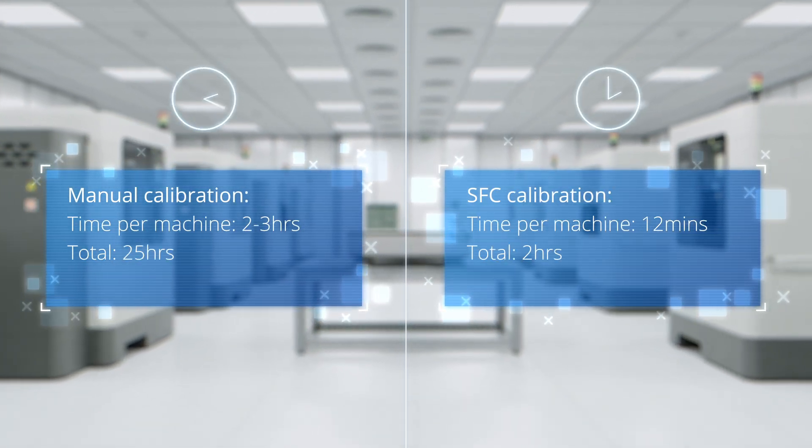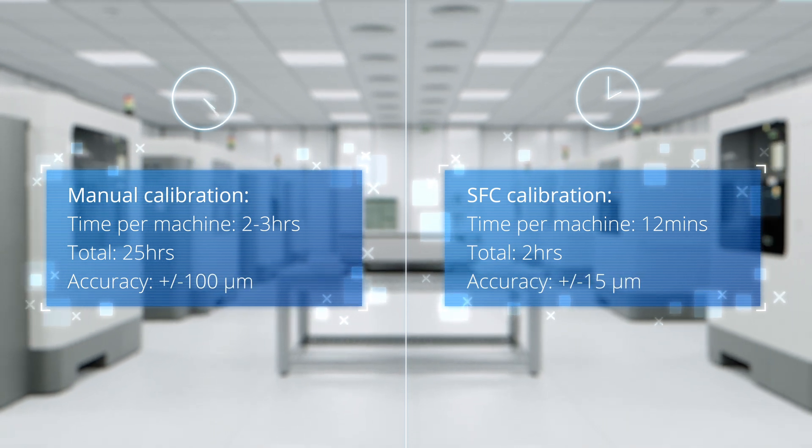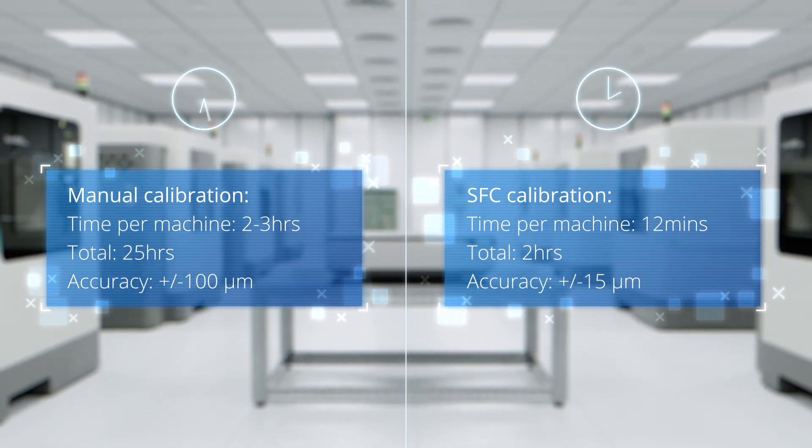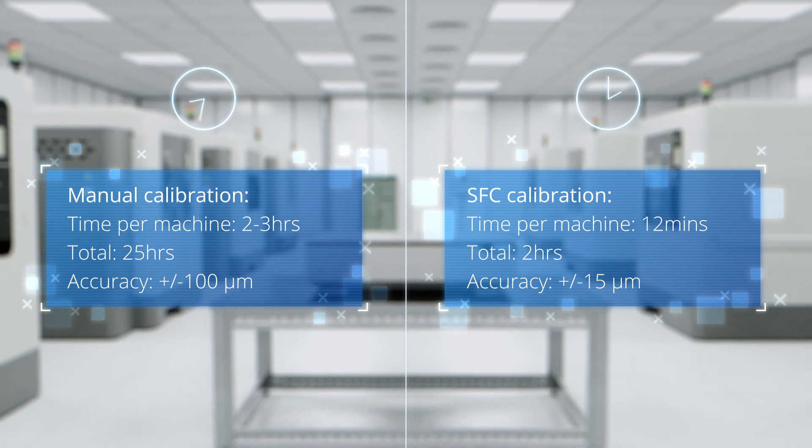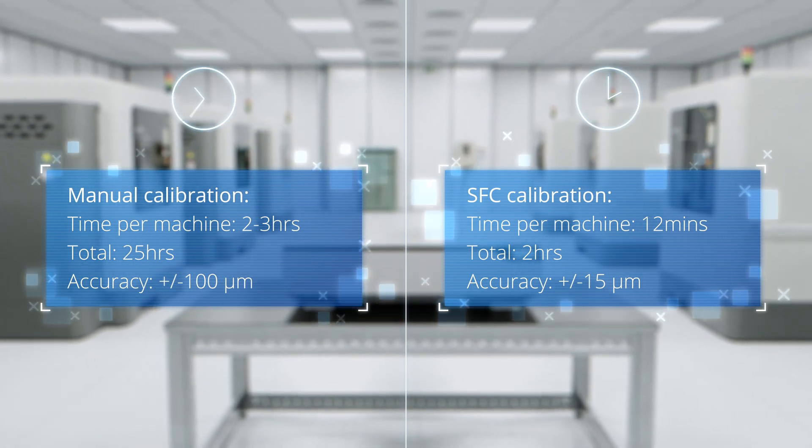In a workshop with 10 deflection units, the SFC can save an average of 23 hours of time, which can instead be used for production while providing a 600% higher accuracy than manual calibration.